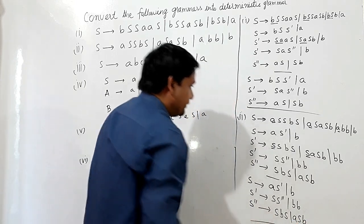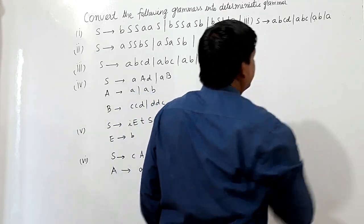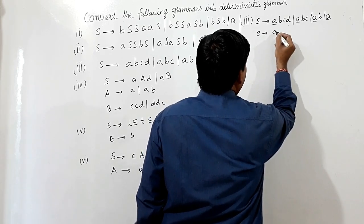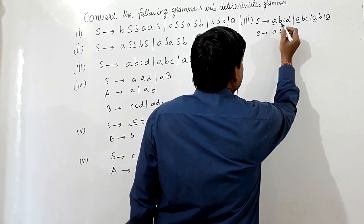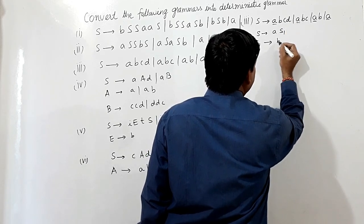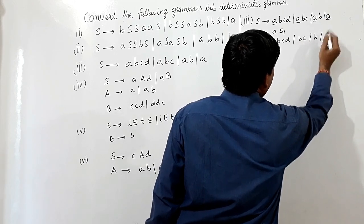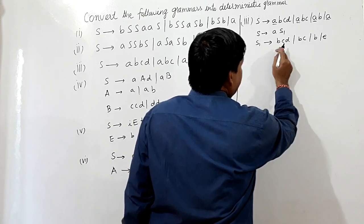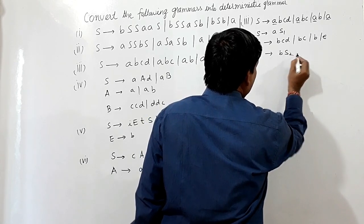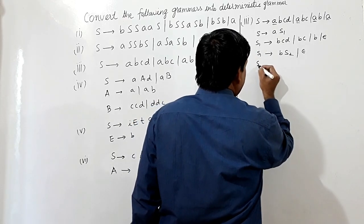Now we shall convert the third grammar into deterministic grammar. We can see A is common in our production — S can be written as AS1. S1 can be written as the remaining part BCD in one production, BC in another, B in another, and S for the last one. Now we can see B is common, so S1 can be written as BS2. Epsilon is written as it is.